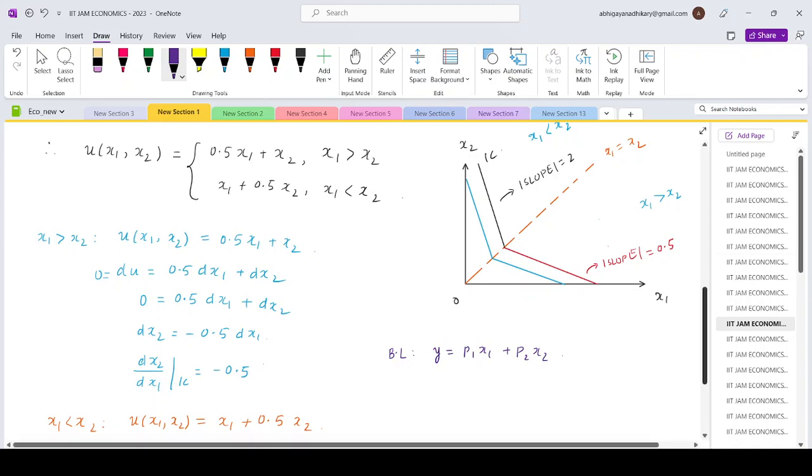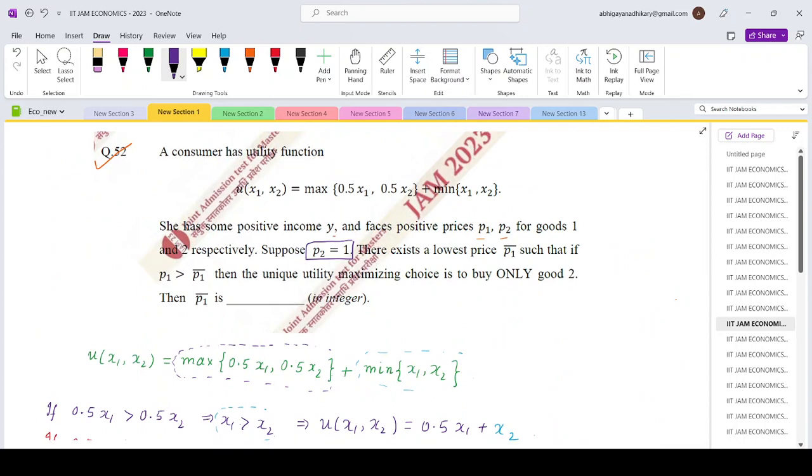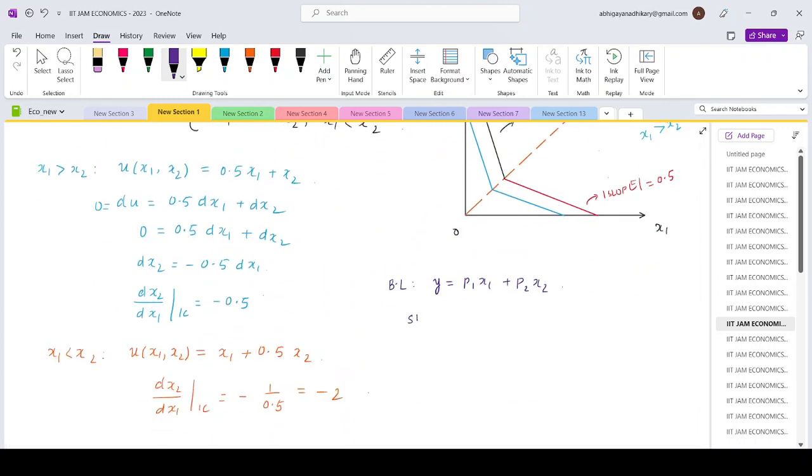So if you look at this indifference curve structure over here, the question says that we want to find out that level of price p₁ bar such that the utility maximizing choice is to buy only good 2. So what is the slope of the budget line?